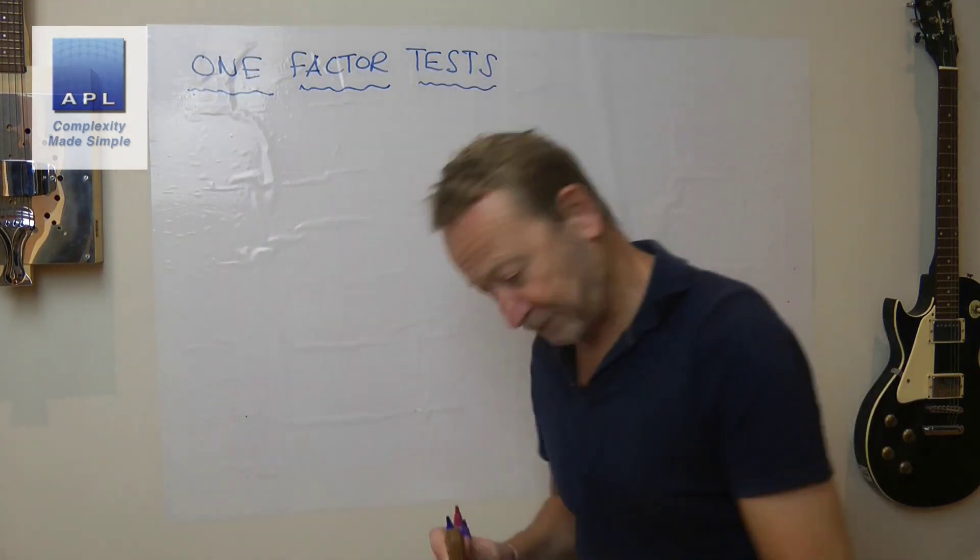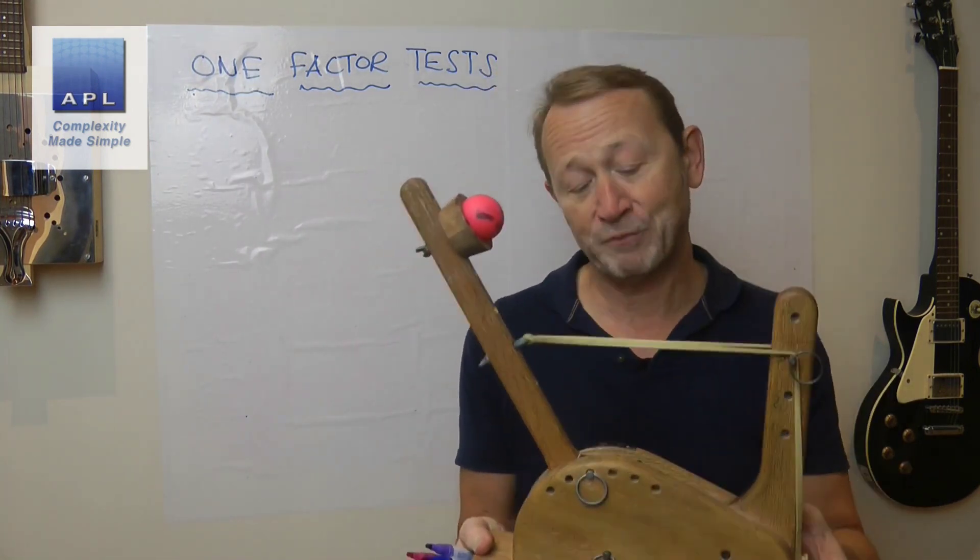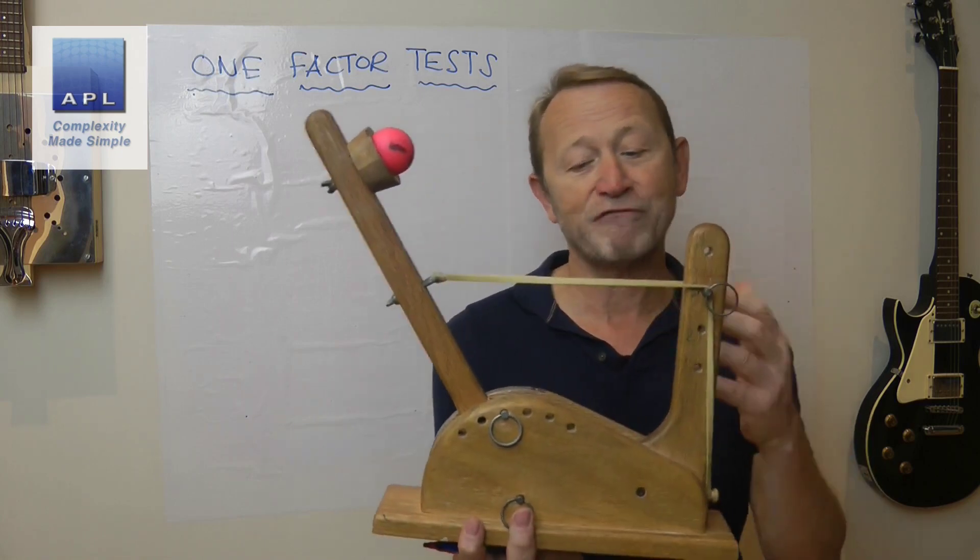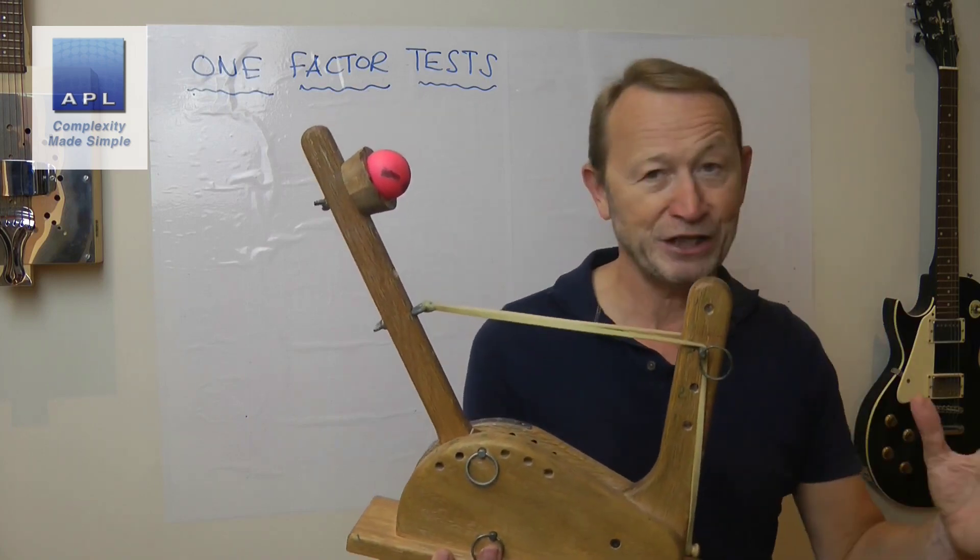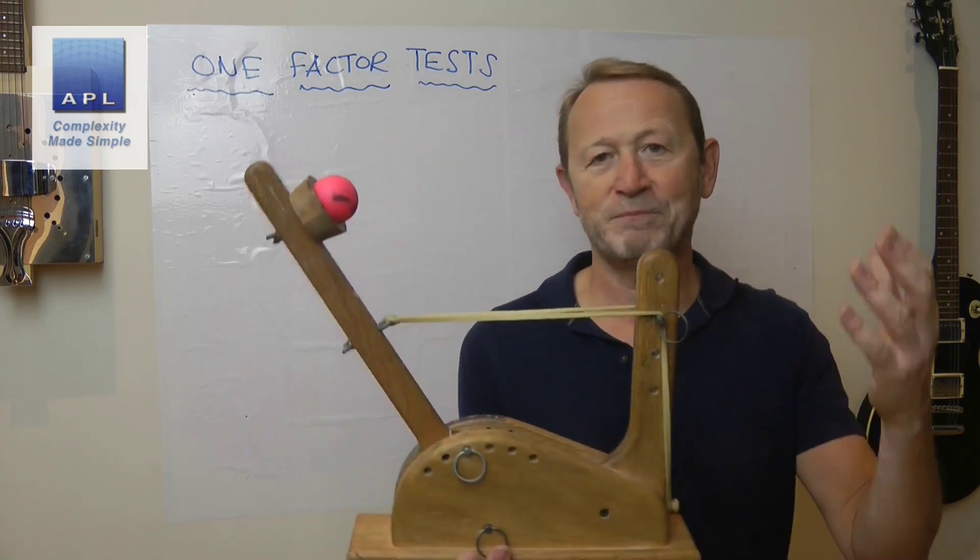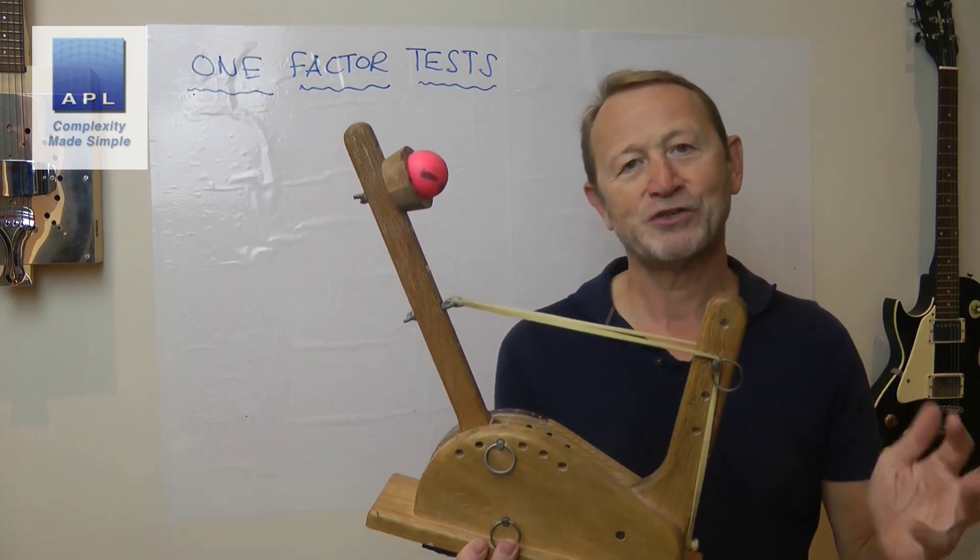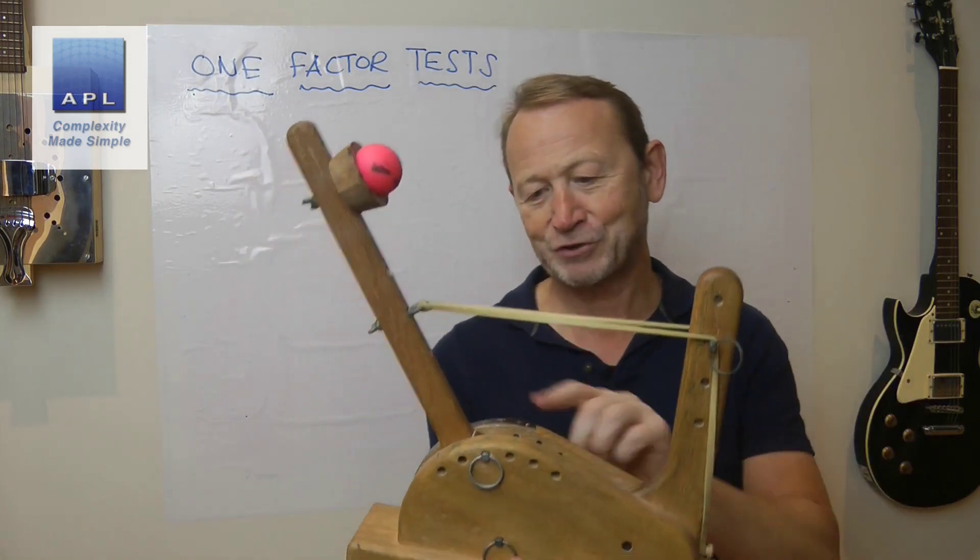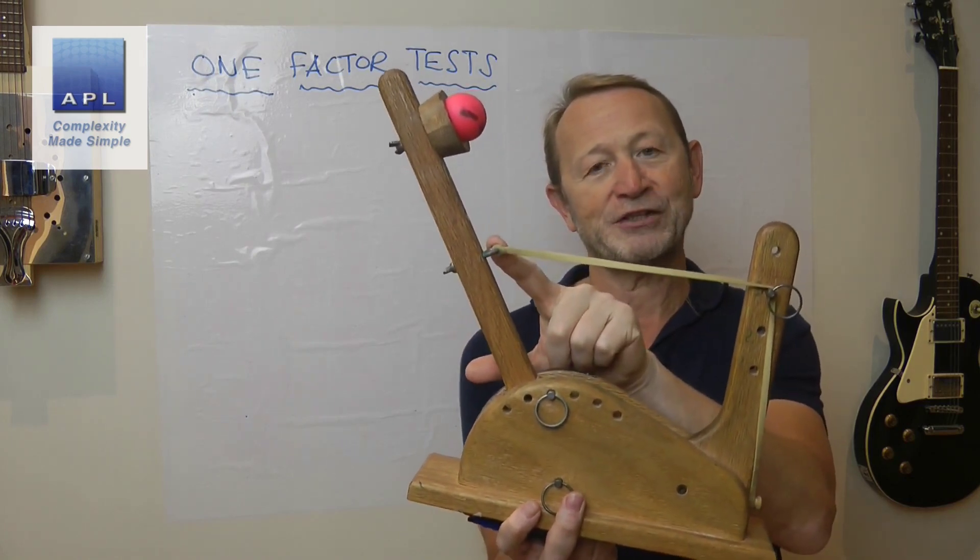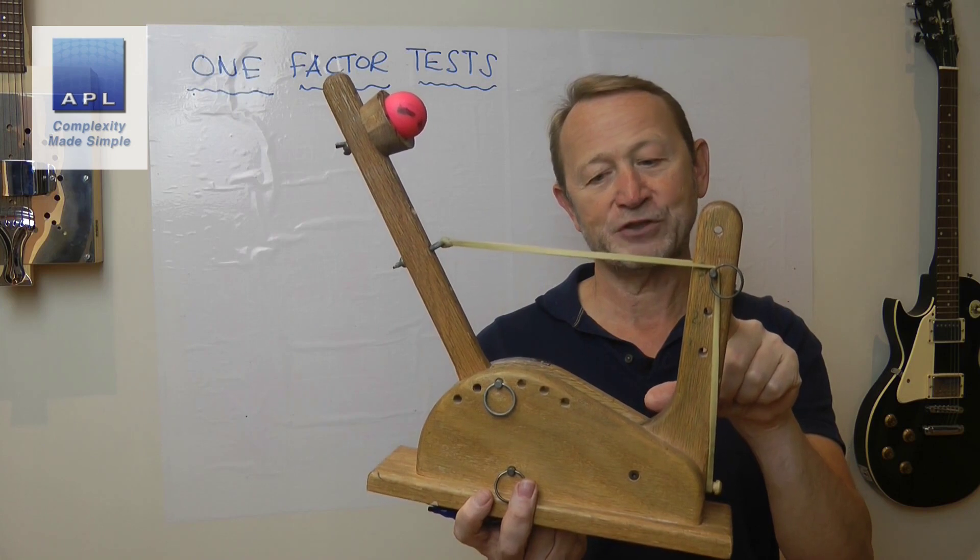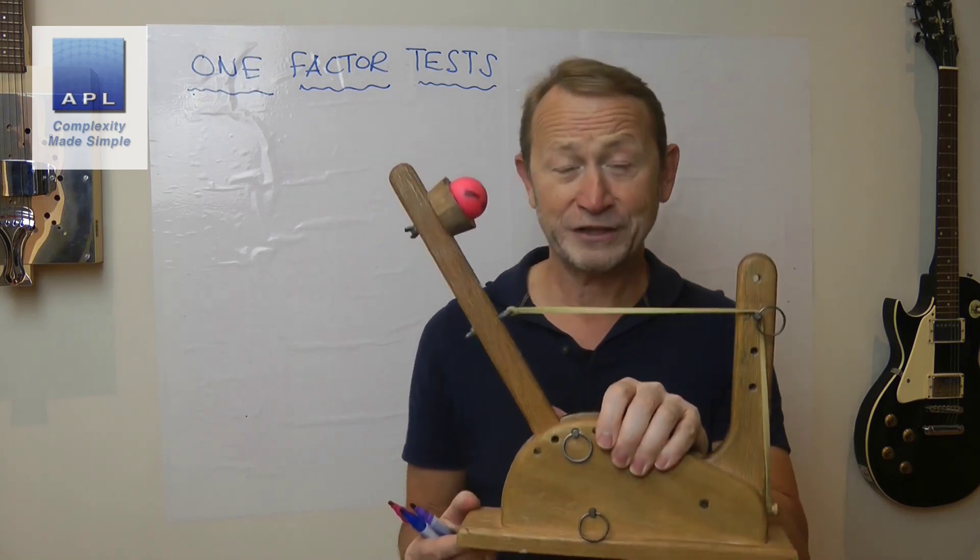I'm going to use the catapult, which is what I use in my workshops. This is your manufacturing process - you can see it's got several settings on it. Just like a manufacturing machine, molding machine, 3D printer, or paint plant, you've got adjustments. There's lots of things you can do. I can adjust the pullback angle, cup height, elastic position, pin position, and stop angle. That's five adjustments on the catapult.